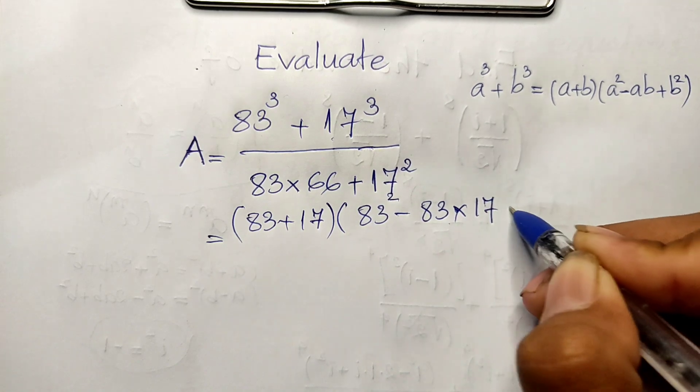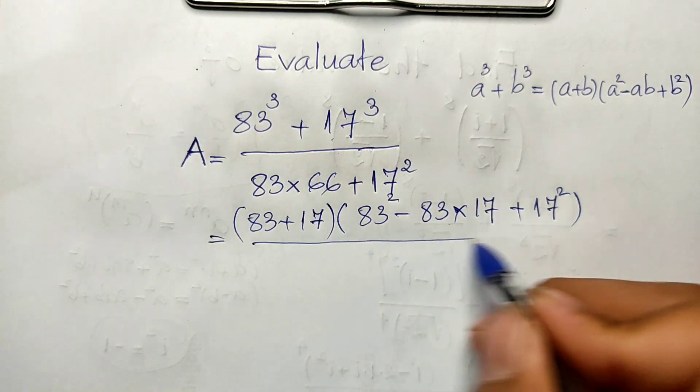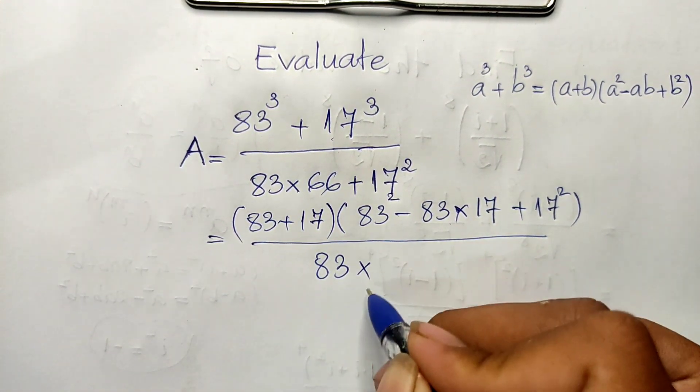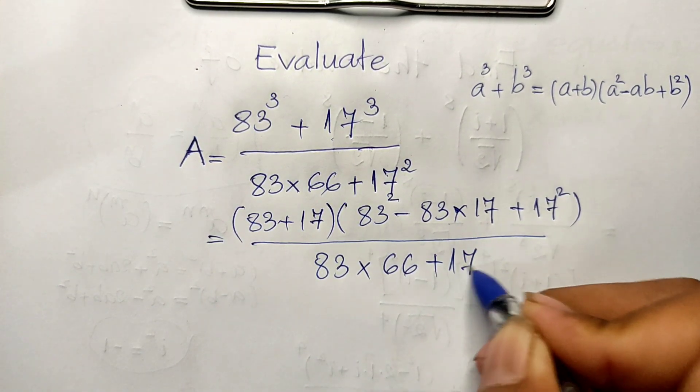And divided by 83 multiplied by 66 plus 17 squared.